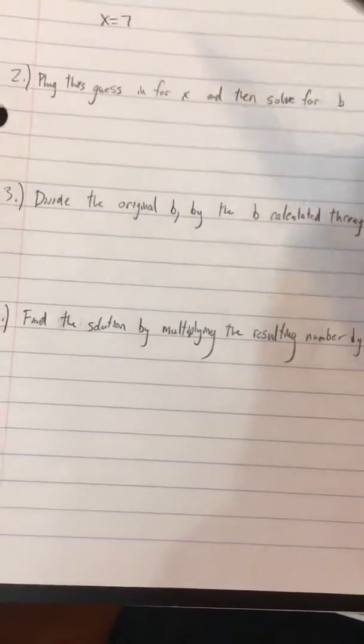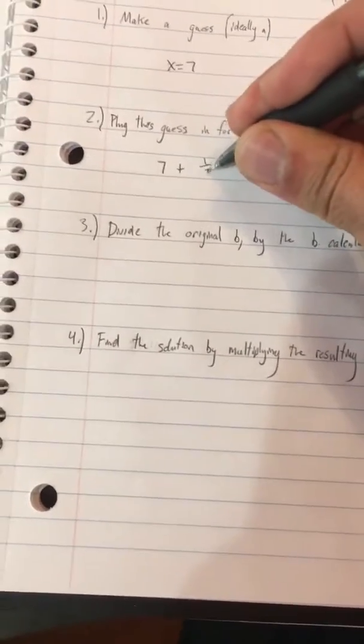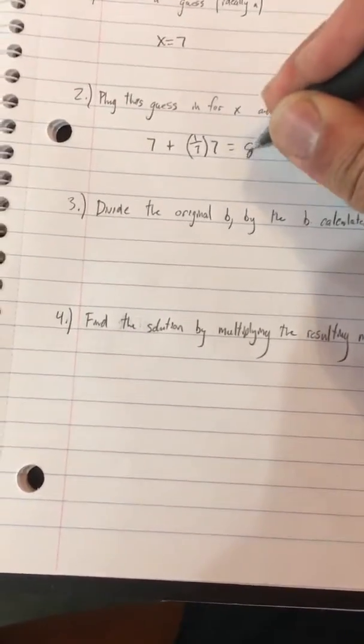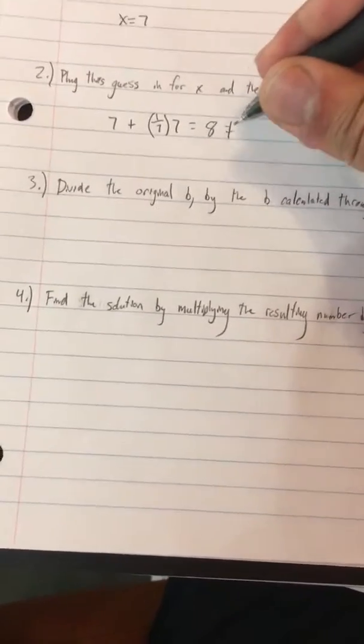Our next step is we want to plug in for x and then solve for b. And when we do this, we get 7 plus 1 over 7 times 7, which equals 8, which clearly does not equal 19.